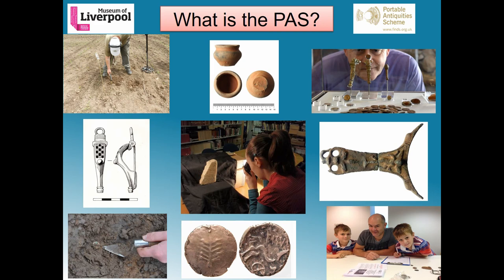I'll start with a brief look at what the Portable Antiquity Scheme is. Every year, thousands of archaeological objects are found by members of the public in England and Wales — by people walking, gardening, and mainly by metal detectorists. Their finds help us build a bigger, better picture of the past. The PAS's main aim is to advance archaeological knowledge by recording objects found by members of the public onto the scheme database finds.org.uk, which is publicly accessible.